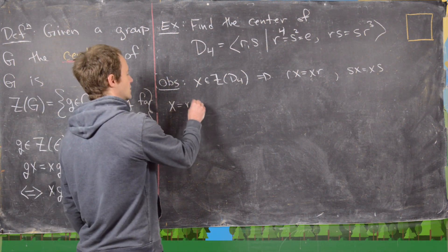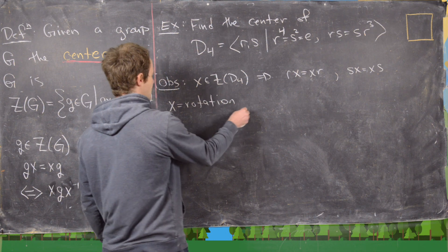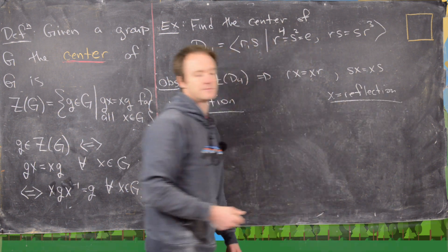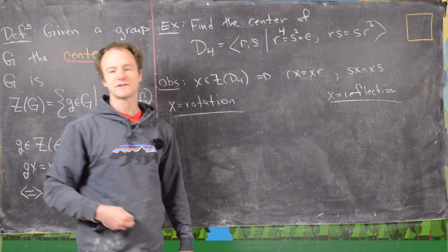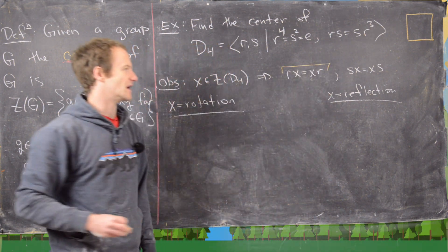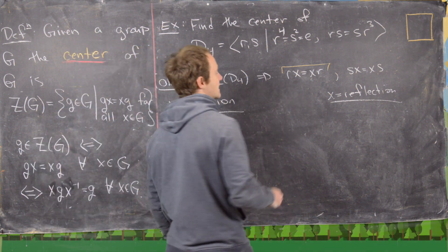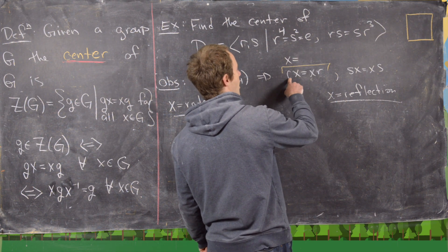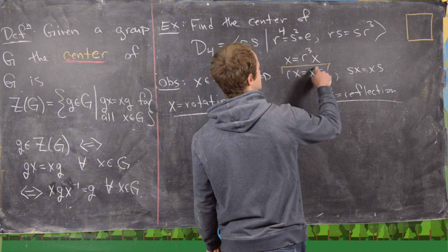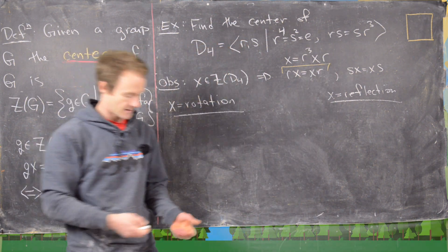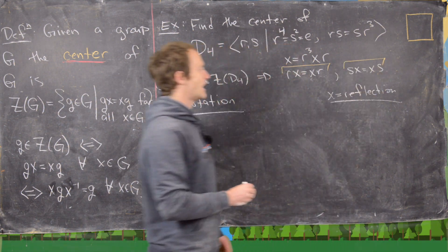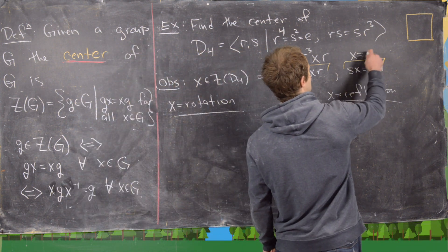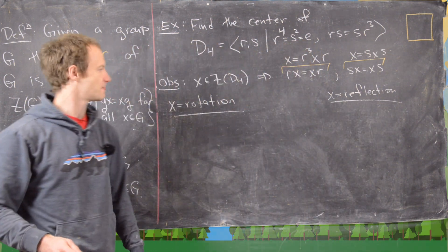The first case will be x equals a rotation, and the second case will be x equals some sort of reflection. Rather than using those formulas directly, I'll use a simpler version: left-multiplying by R inverse gives R inverse times x times R, which is the same as R cubed times x times R. Similarly, left-multiplying by S inverse — but S inverse is just S since S squared is the identity — gives x equals SXS.